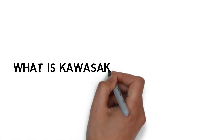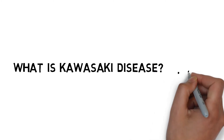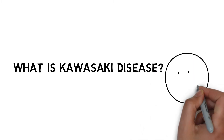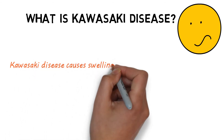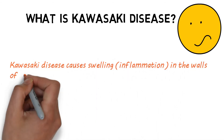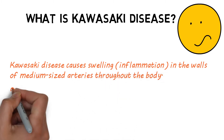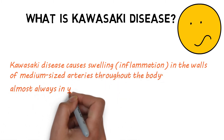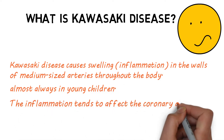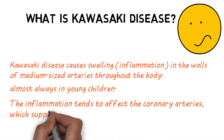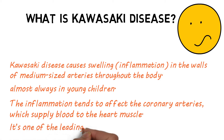What is Kawasaki disease? Kawasaki disease causes swelling in the walls of medium-sized arteries throughout the body, almost always in young children. The inflammation tends to affect the coronary arteries, which supply blood to the heart muscle. It's one of the leading causes of heart disease in kids.